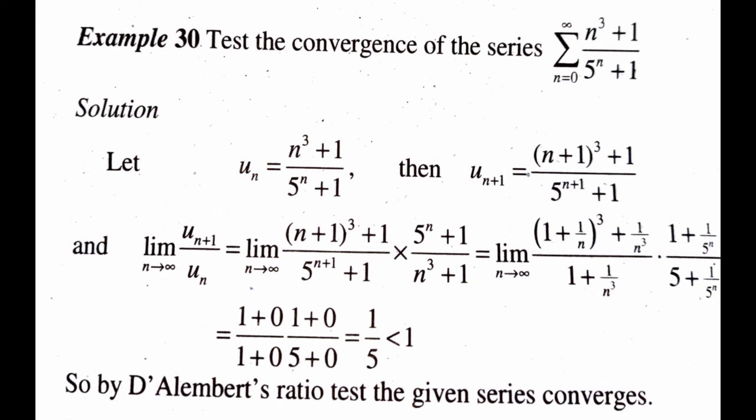Applying the limit, it becomes (1+0)(1+0) / [(1+0)(5+0)], which equals 1/5. Since 1/5 is less than 1, by D'Alembert's ratio test the given series converges.